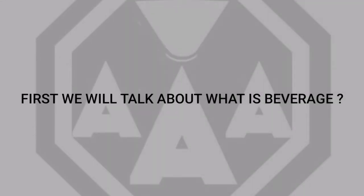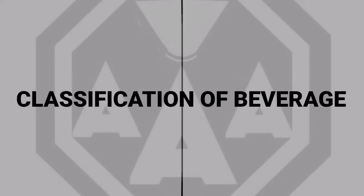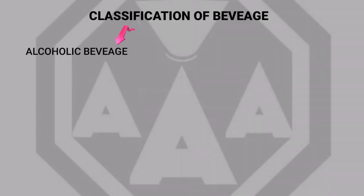First, we will talk about what is a beverage. Any drink prepared for human consumption except water — every other drinkable liquid is called a beverage. Examples include spirits, tea, coffee, smoothies, etc. Classification of beverages has two parts: one, alcoholic beverages, and two, non-alcoholic beverages.